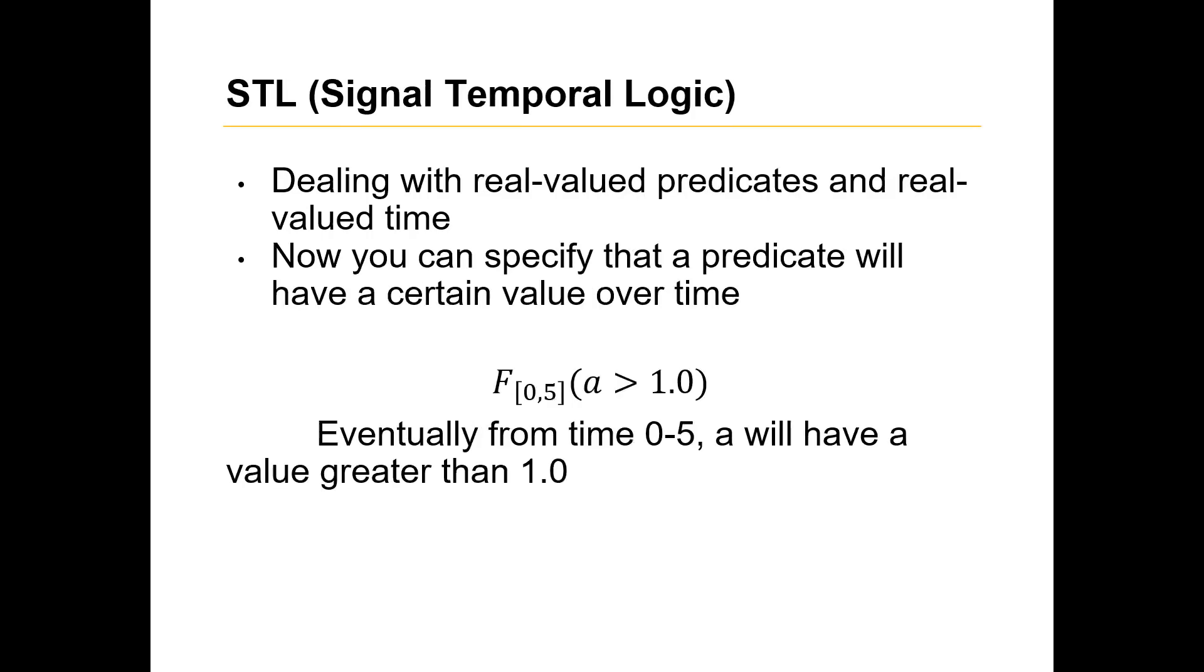And signal temporal logic is combining that where you're dealing with continuous time, and now you're dealing with real value predicates. Again, you can do this. Eventually, from time 0 to 5, A will have a value greater than 1. You can also use this for speed. If you want to limit a speed constraint. Say you're on a 45-mile-an-hour road. Always, from this time to this time, your speed will be less than where the speed is. Continuous time and continuous predicates as well.